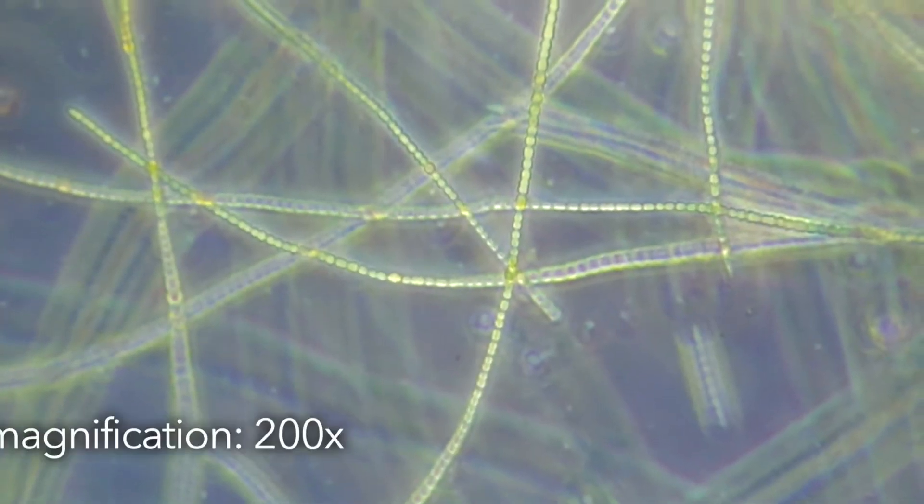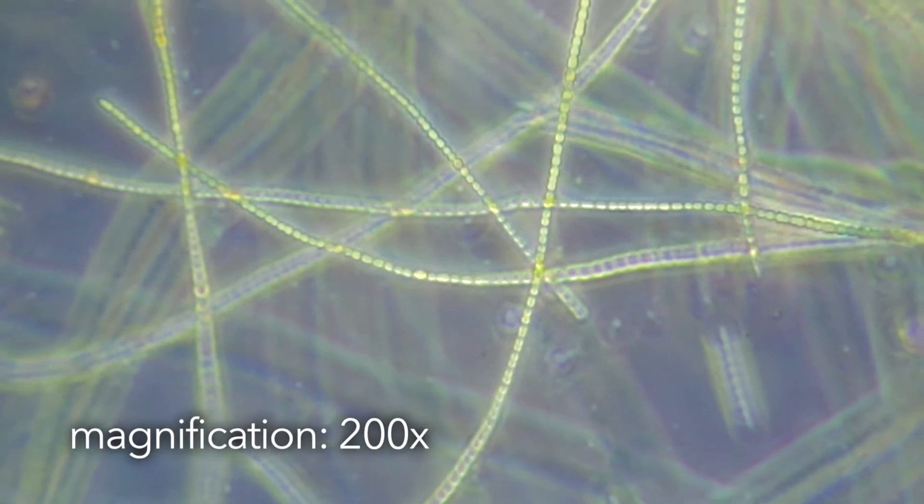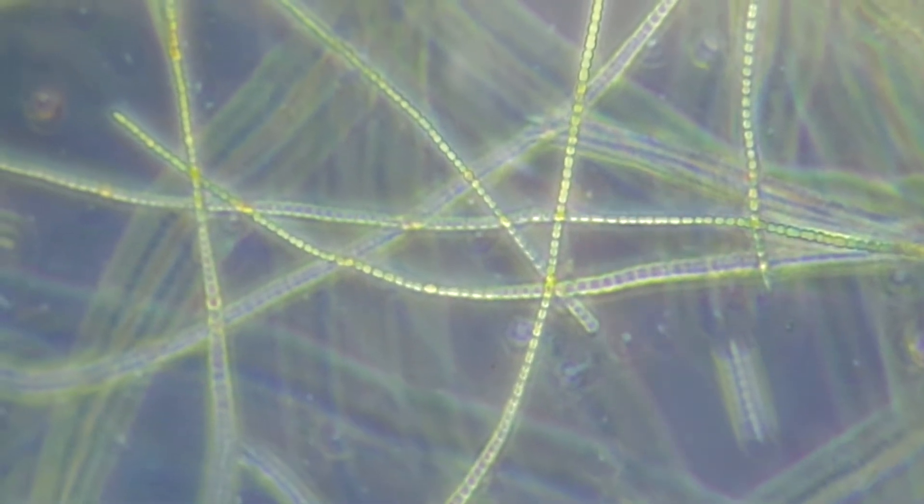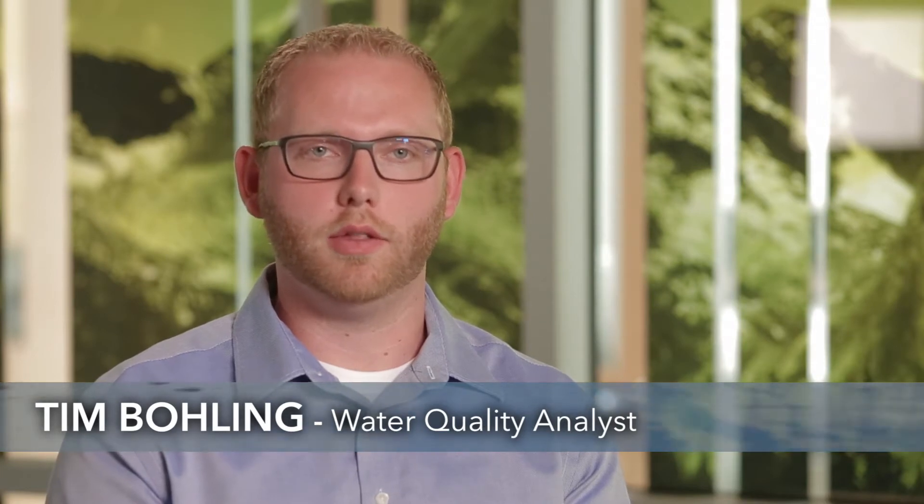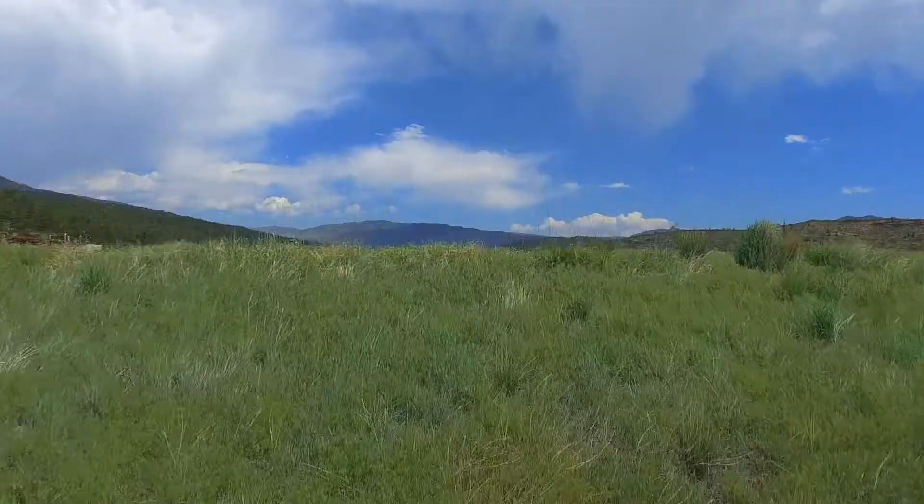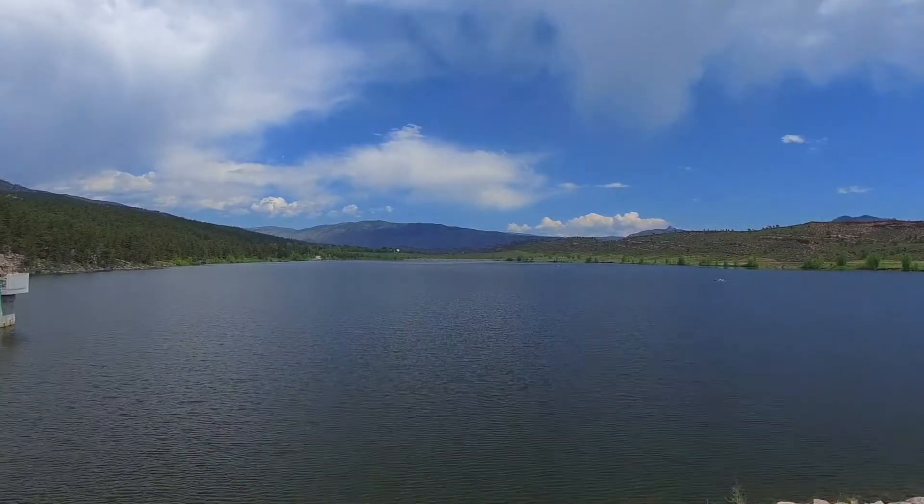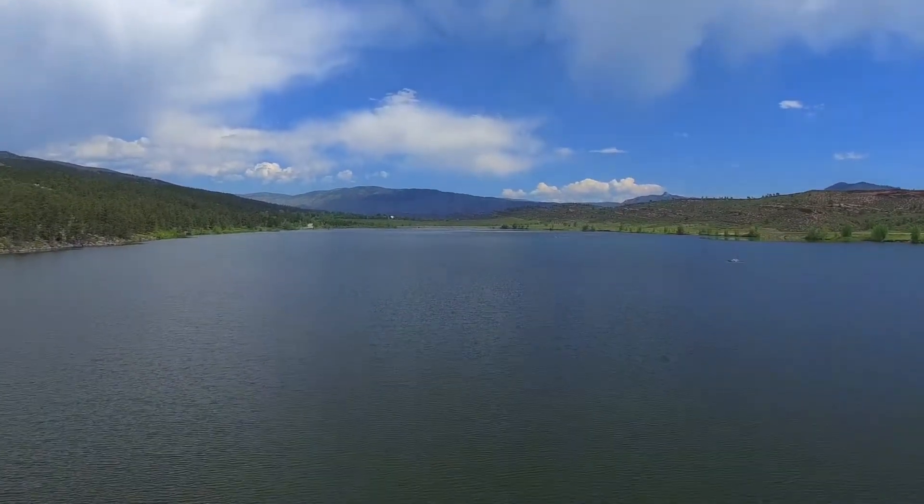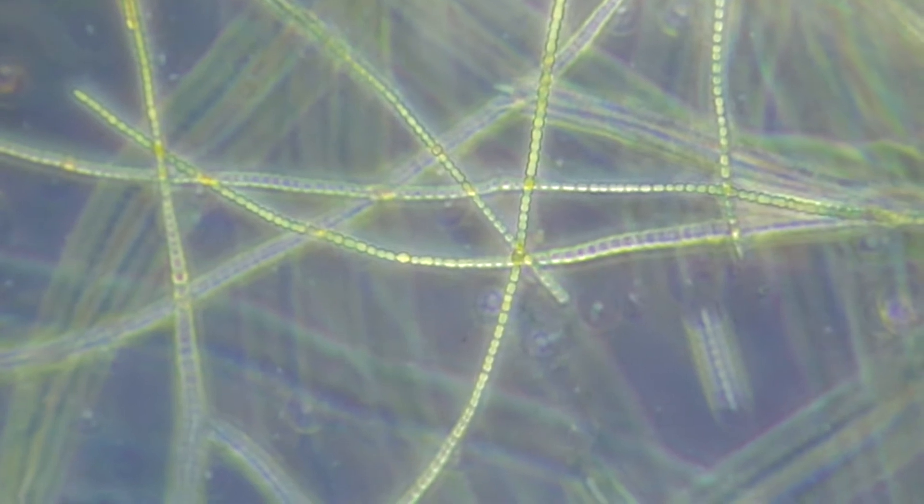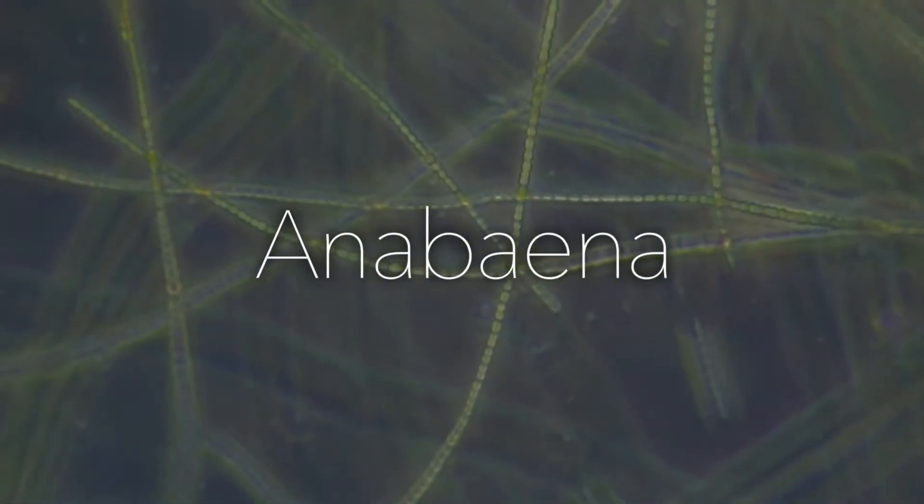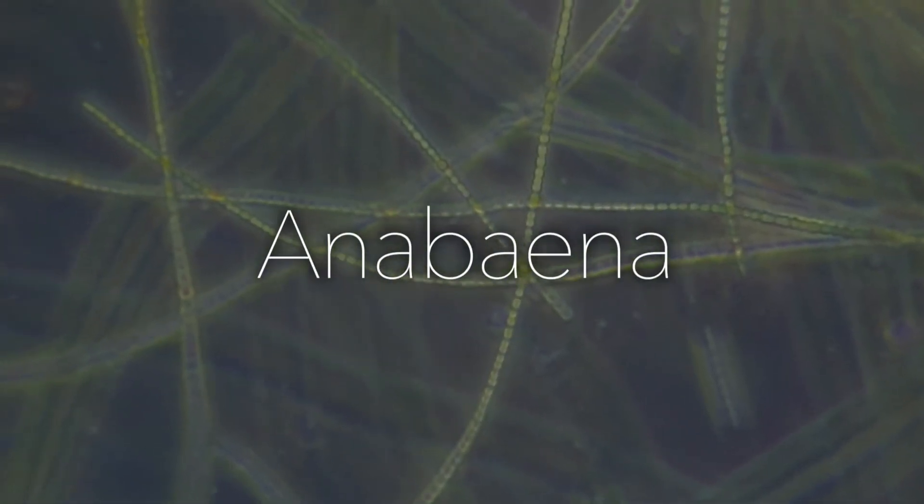Algae is a naturally occurring microscopic organism. It occurs in all natural water bodies. Its role is to provide nutrients and photosynthesize to create a healthier environment. Green Ridge Glade Reservoir has numerous species of algae, some of which release taste and odor. One species in particular produces more than others. It's called anabina, and it's very common to this area.